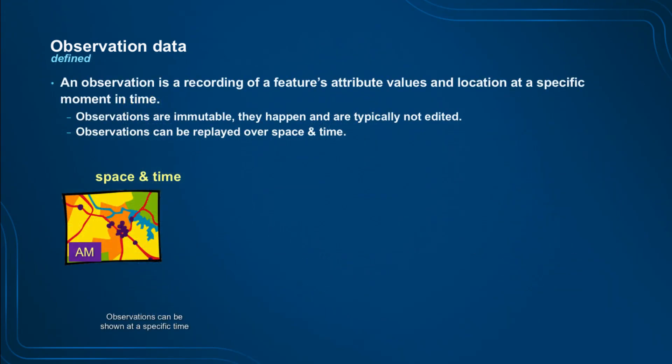Observation data can be defined as features, attributes, and values at a specific moment in time. They're typically immutable — like a film strip where you capture cells and can replay it. When we first introduced the big data store, editing wasn't enabled, and we got feedback requesting it. Now at 10.5 you have full edit capabilities. The store is optimized for replaying over space and time, with access optimized by space, by time, or any combination, plus attribute where-clause constraints.